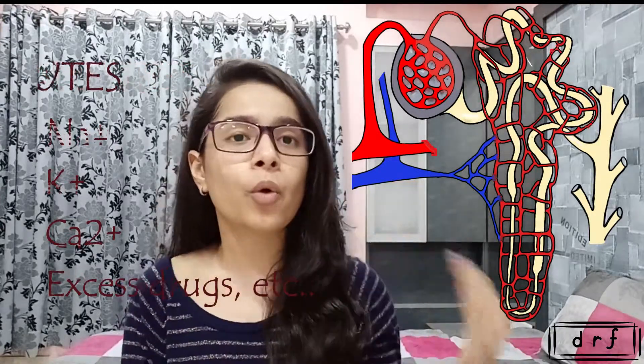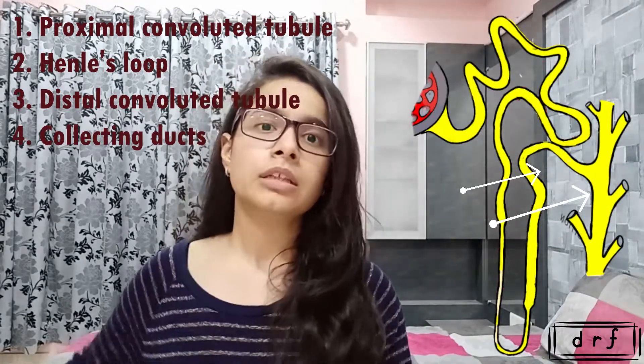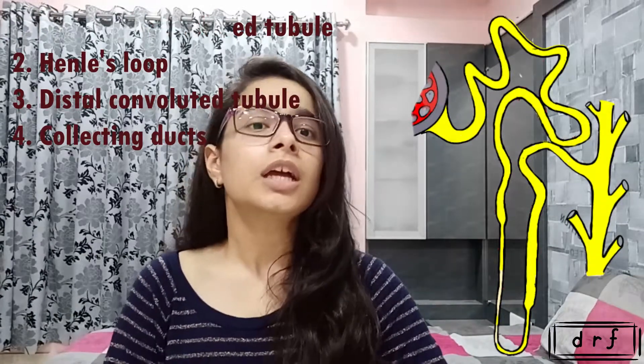The blood pressure is high because blood needs to be filtered there. Due to high blood pressure, many salts like sodium, potassium, unwanted or excess drugs, and excess water are absorbed from the blood into a tubular structure, forming tubular fluid. This fluid is transferred from the proximal tubule to the loop of Henle, then to the distal convoluted tubule, and finally into the collecting tubule, which drains into the ureter — where we feel the pressure of urine.